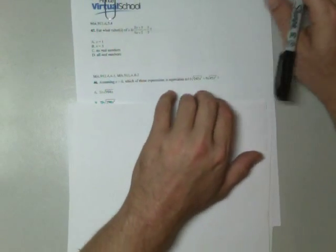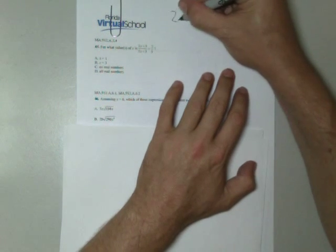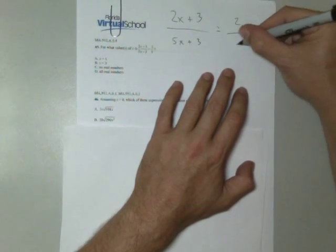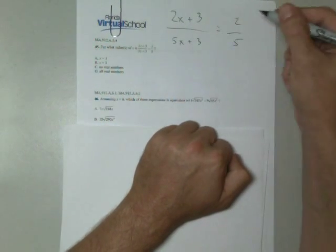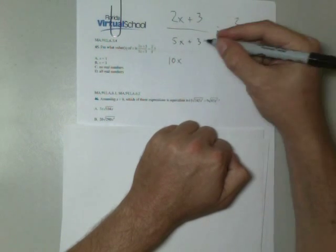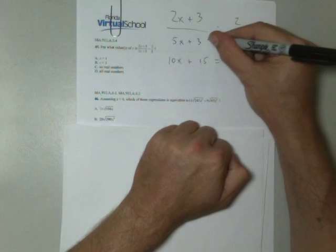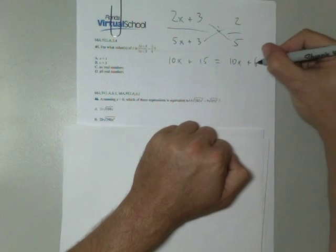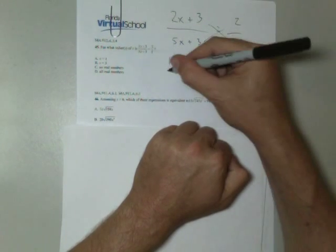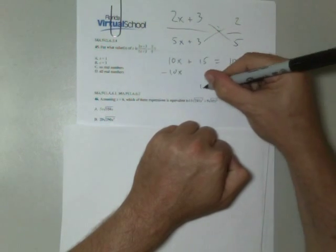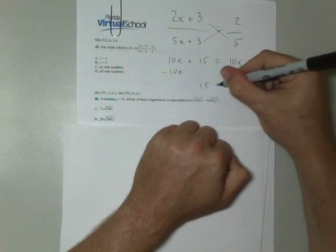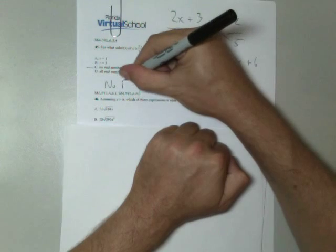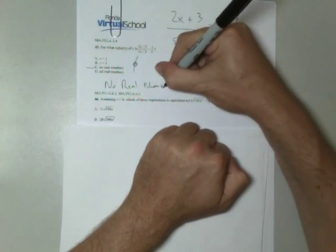For what value of x is (2x + 3)/(5x + 3) equal to 2/5? Cross multiply. 5 times 2x is 10x + 15 equals cross multiply here, 10x + 6. If I subtract 10x from both sides, I'll get 15 equals 6. That's not a true statement. The answer is the empty set or no real numbers.